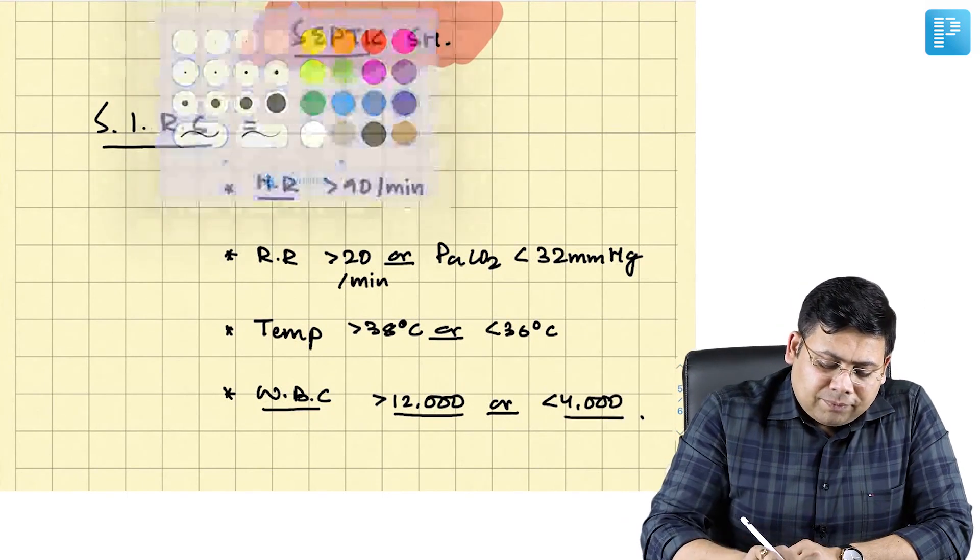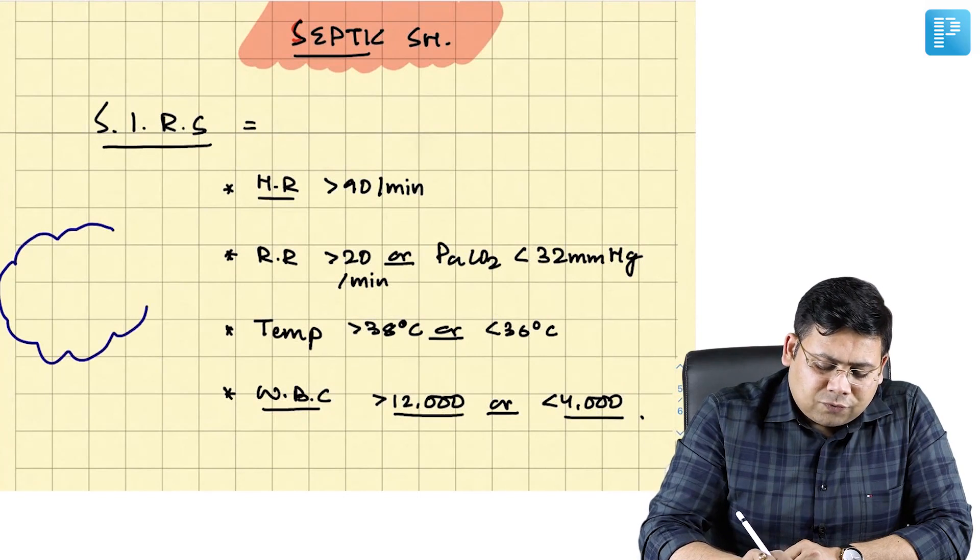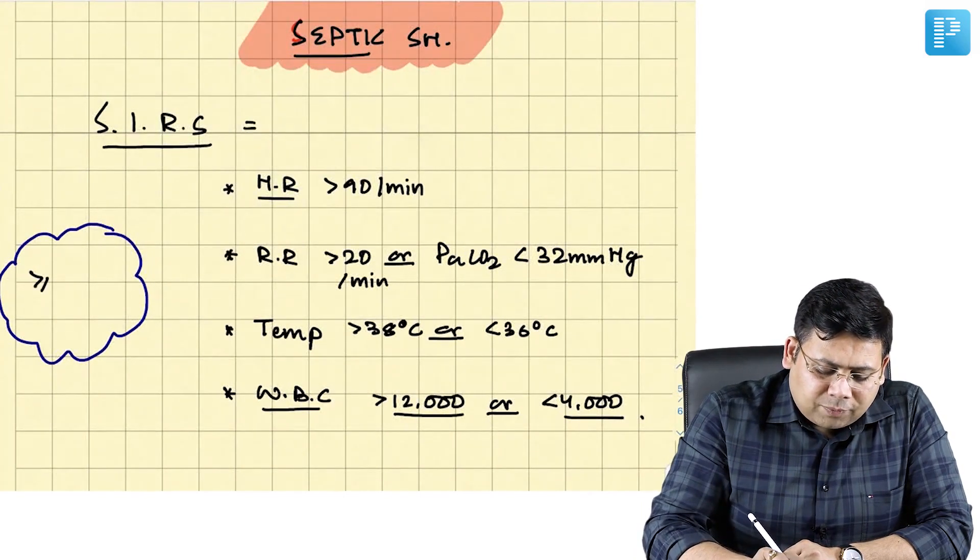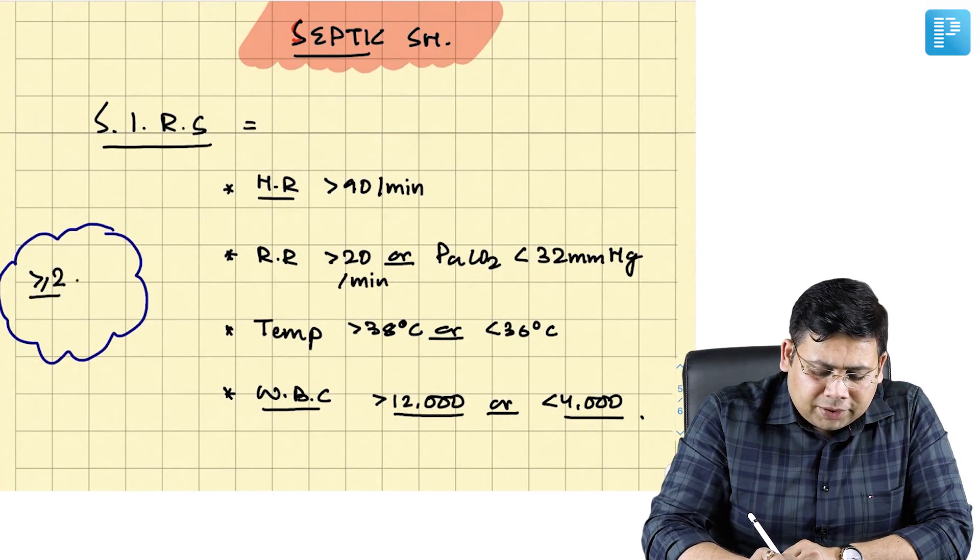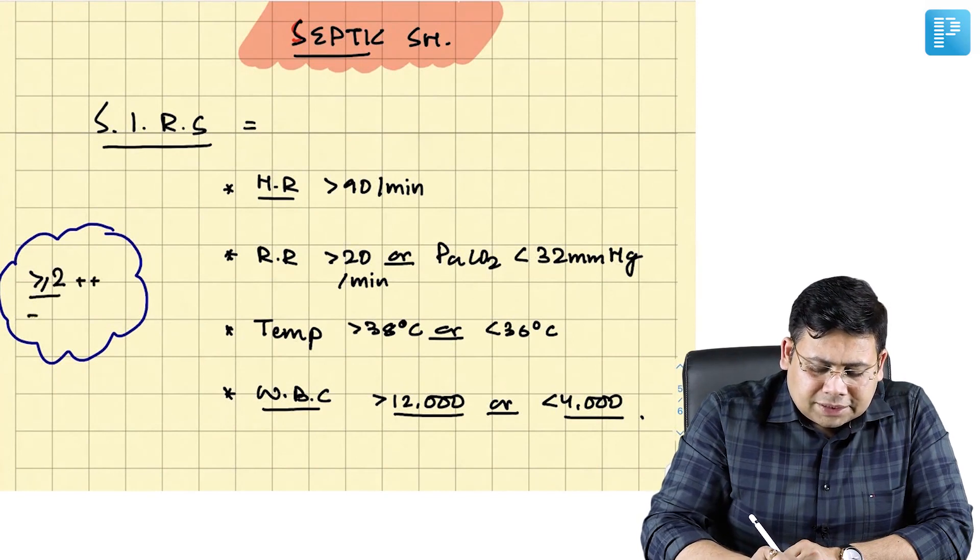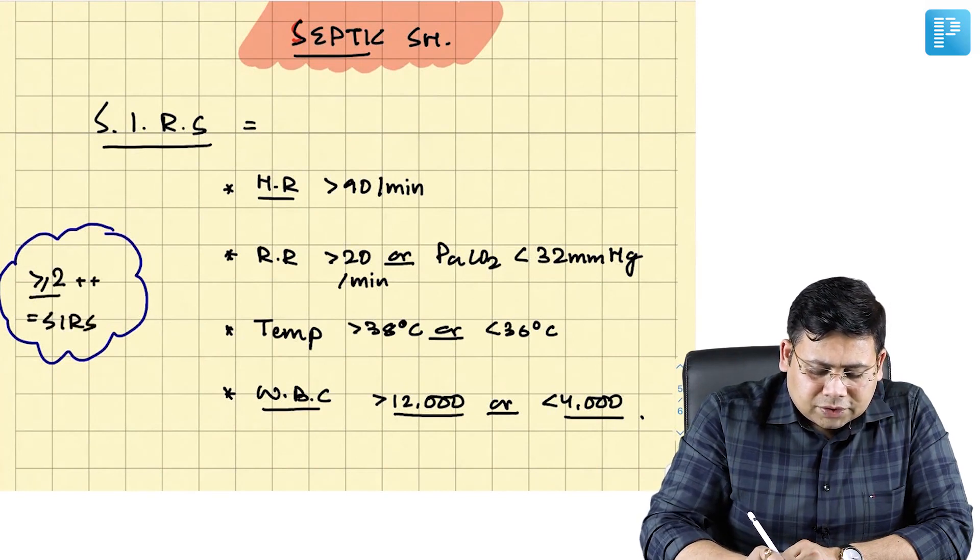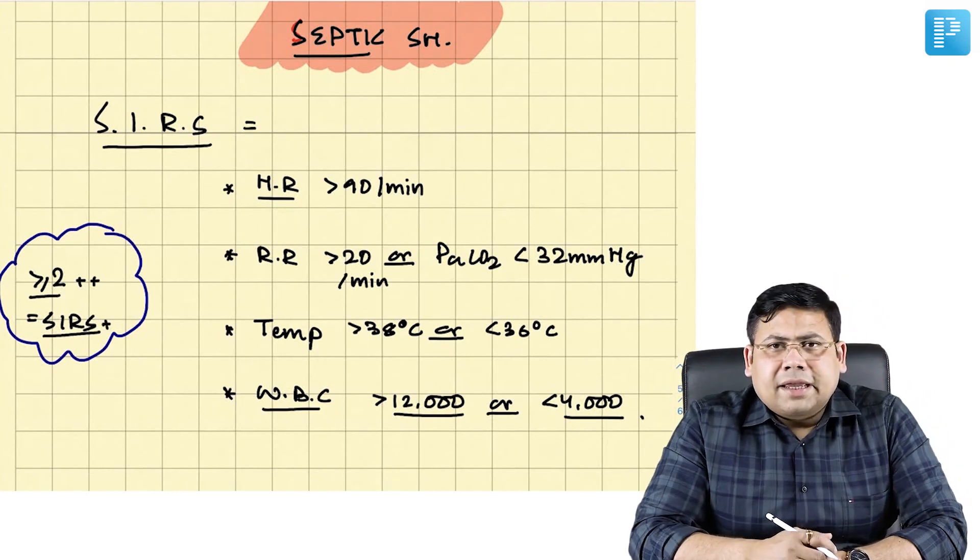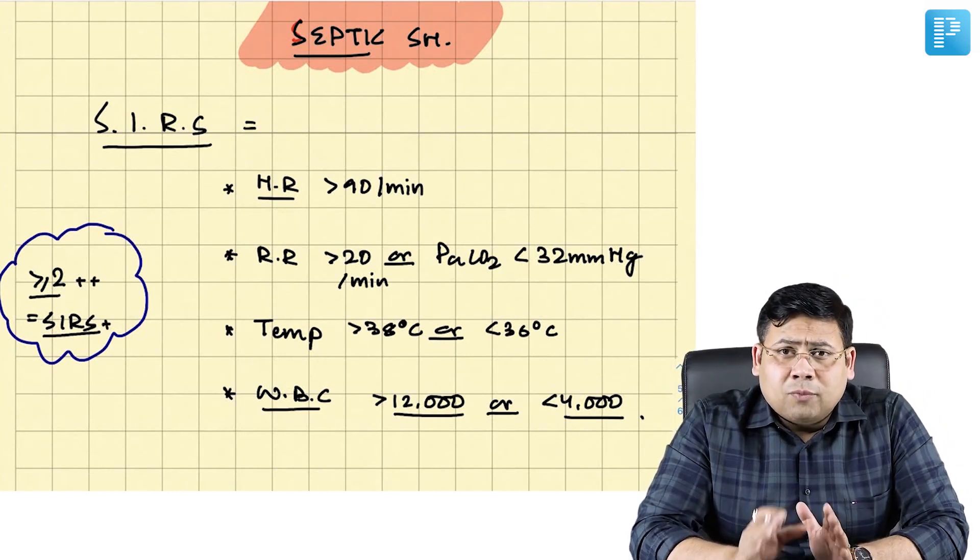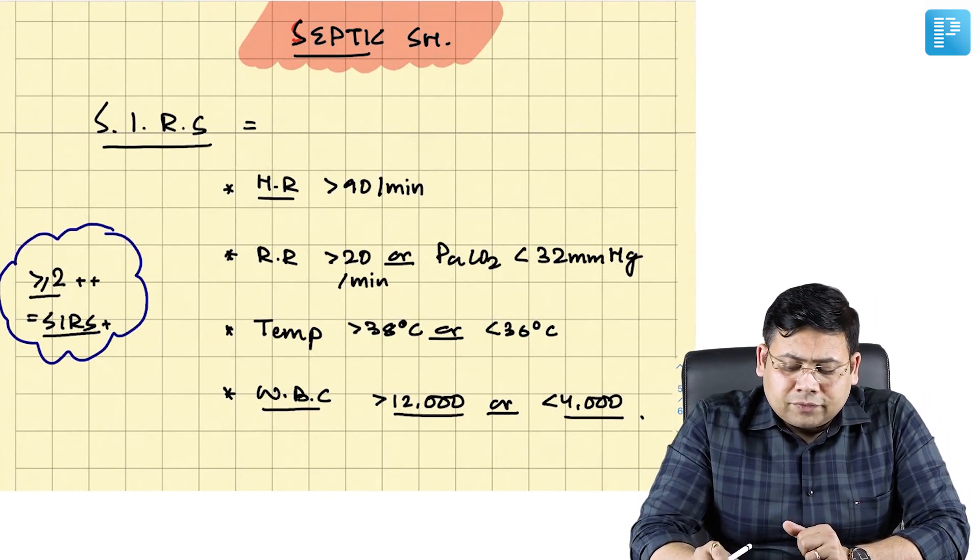If out of these four parameters two or more parameters are positive, this is considered as SIRS positive. So out of four parameters, at least two or more than two should be positive.